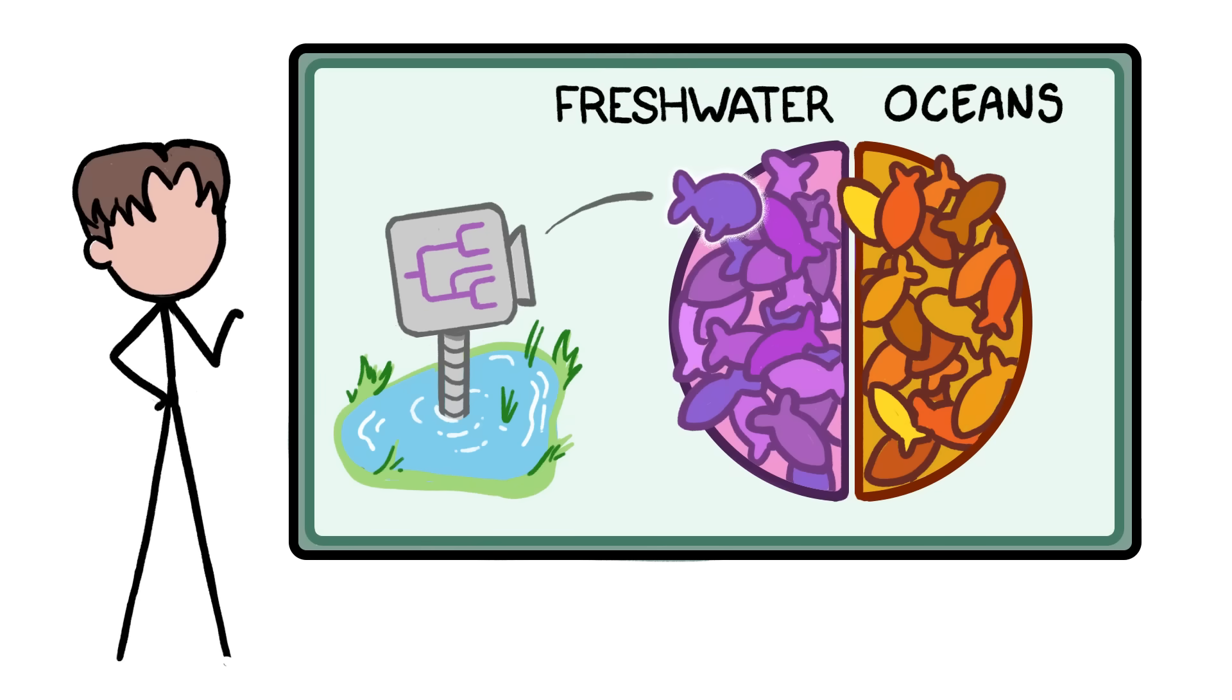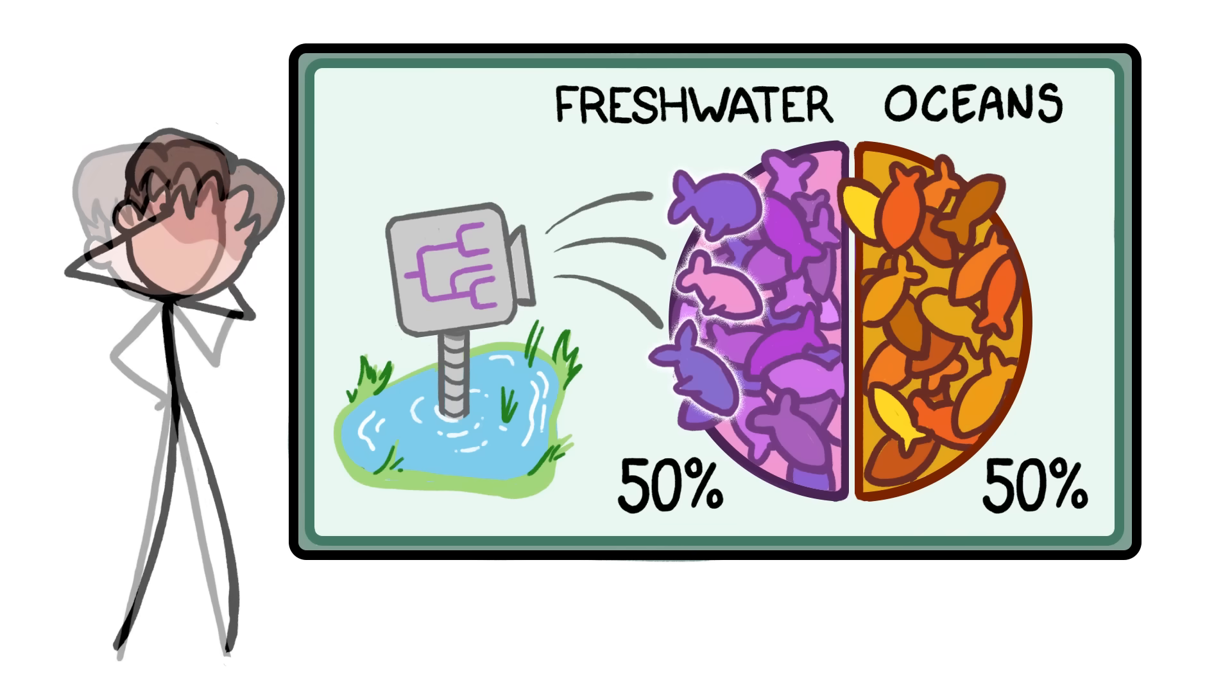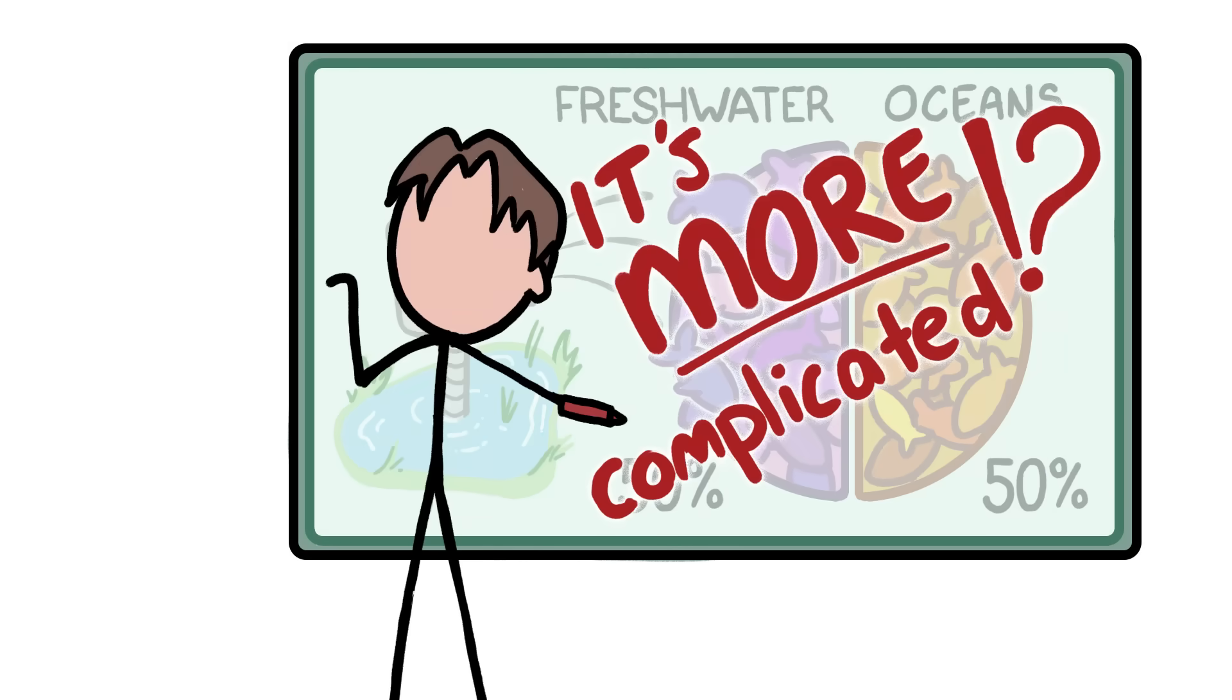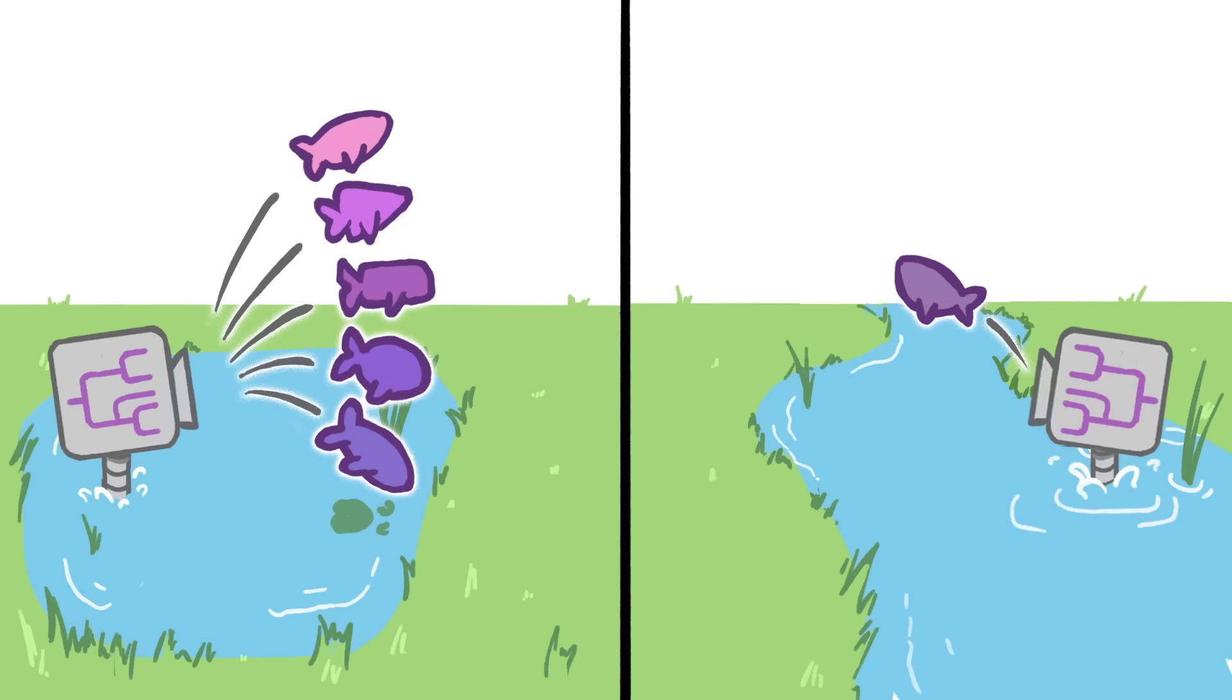That's it then. Lakes must simply churn out so many new fish species that they pad the freshwater numbers. Except there's a tiny problem with that. Even though new species arise more quickly in lakes, the current total number of species in lakes isn't that high.